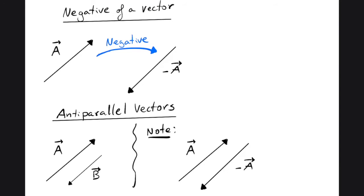Now let's look at the negative of a vector. We define the negative of a vector as having the same magnitude as the original vector, but in the opposite direction, and we describe this with a negative sign in front of the vector.